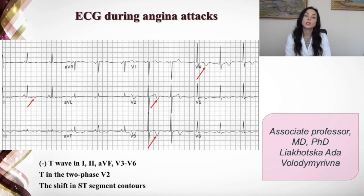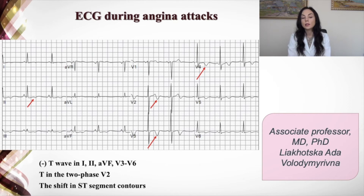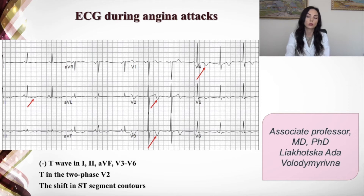Here you can see an ECG during angina pectoris. Please pay attention: you can see negative T-waves in leads I, II, aVF, V3, and V6; a biphasic T in the V2 lead; and a shift in the ST segment contour.